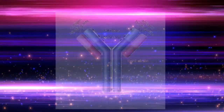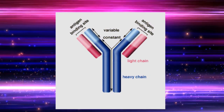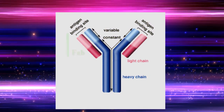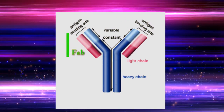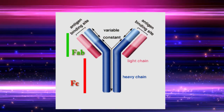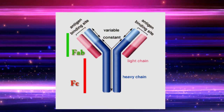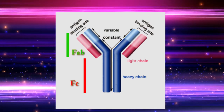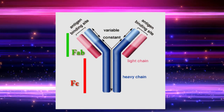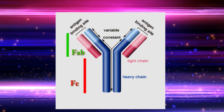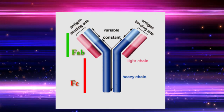Antibody structure can be divided into two major parts: FAB and FC. The FAB part contains two major regions — the constant region and the variable region. The constant region determines the mechanism used to destroy antigen.